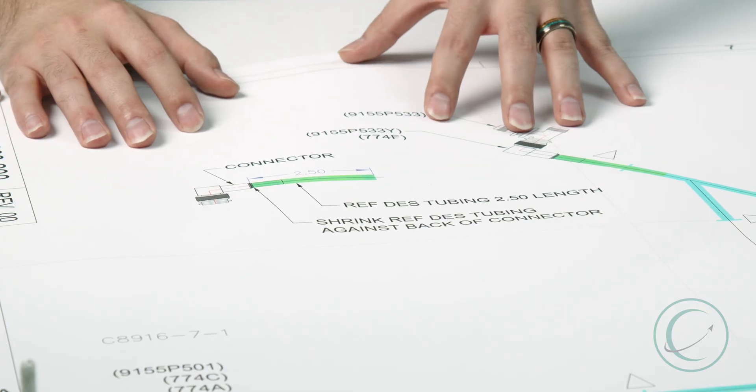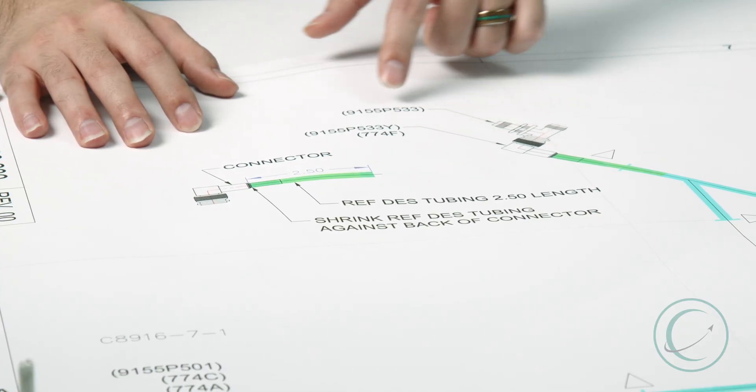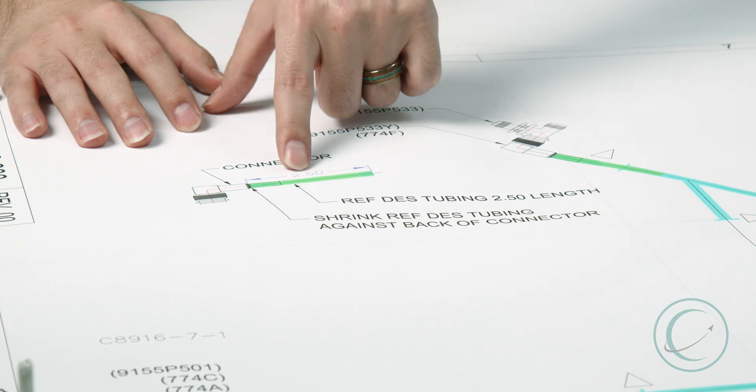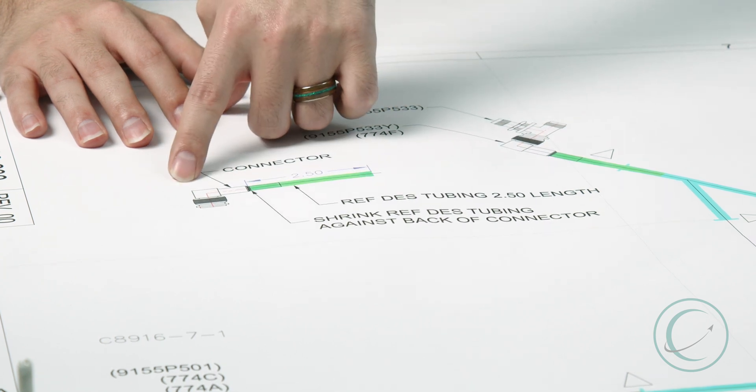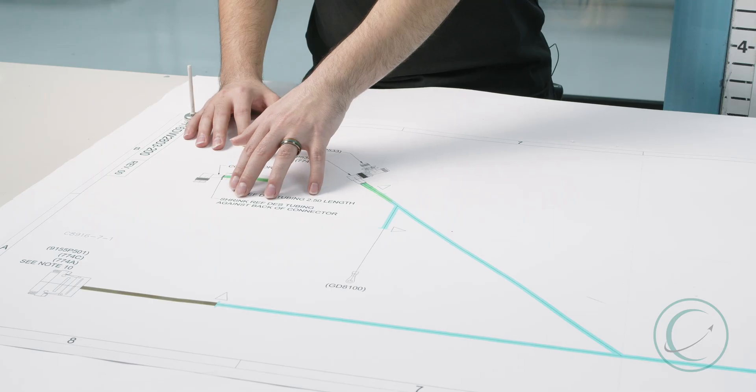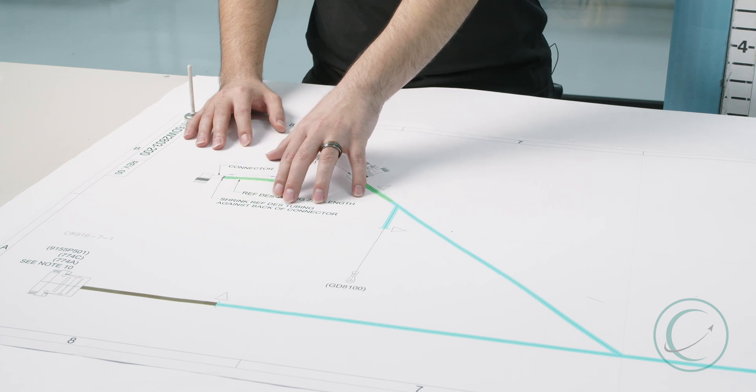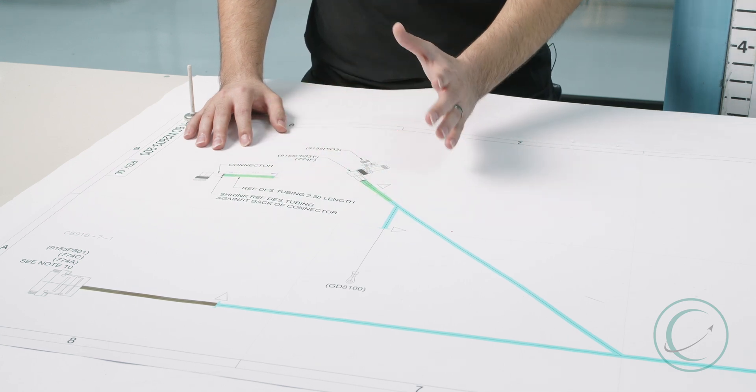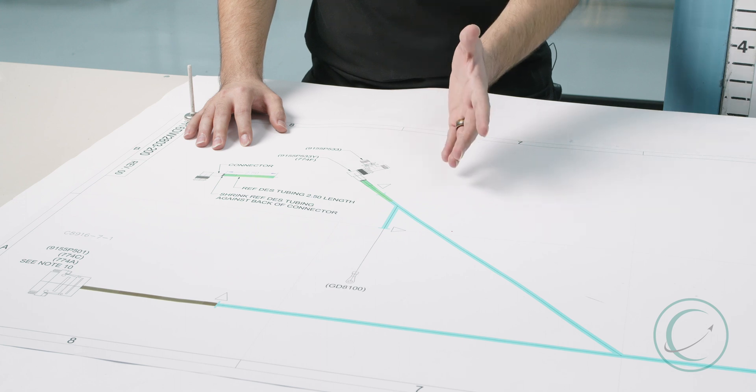Another example of information that we add to our harness assembly drawings are our ref deses, tubing sizes, connector orientation, noting that there's a shrink ref des tubing at this location. Stuff like this is going to help our assemblers manufacture their harnesses in a better, faster way.